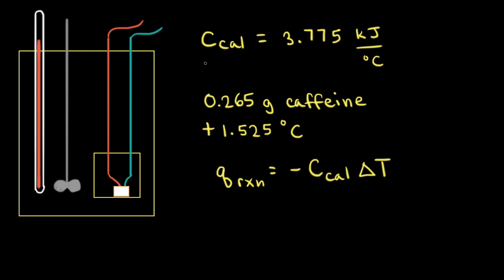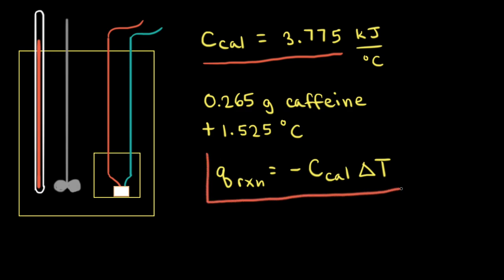Now that we know the heat capacity for our specific calorimeter, we can use this value to calculate the heat of combustion for another substance. The heat of combustion Q would be equal to the negative of the heat capacity of the calorimeter times the change in the temperature of the water in that calorimeter.